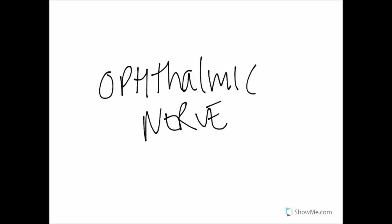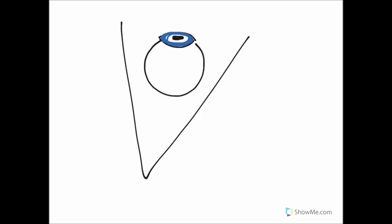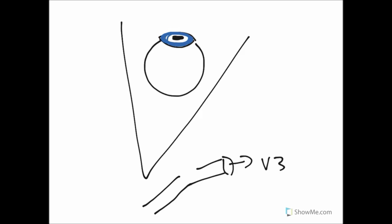Here we've got an eyeball in the orbit. What we need to do to begin with is draw on cranial nerve 5 coming in here. Cranial nerve 5, as you know, is going to give rise to three divisions. One of them goes off down here through the foramen ovale — that is V3, the mandibular division.